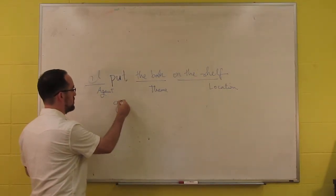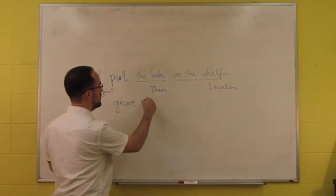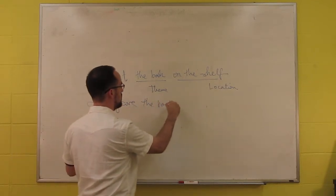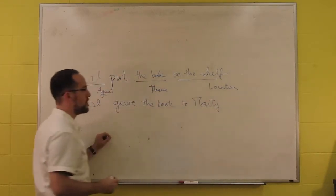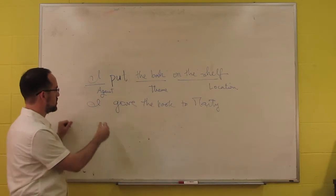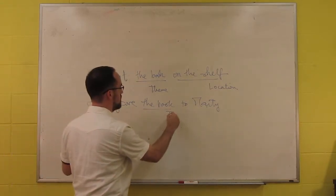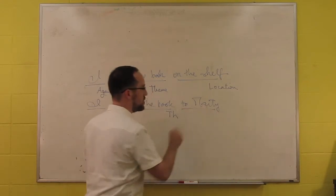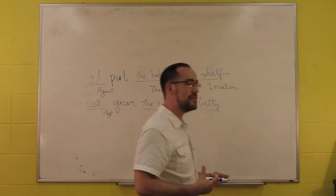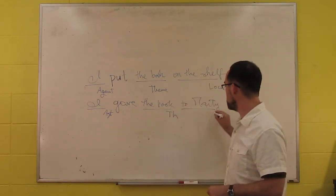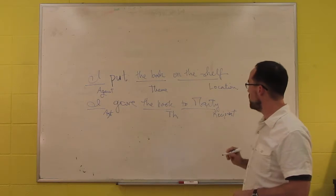But you can contrast them to give. So if you say, I gave the book to Marty, so there, Marty is still required, and we get an agent, a theme, but here, we don't want to say Marty is a location, because he's not a location. Instead, he's receiving the book, so we say he's the recipient.